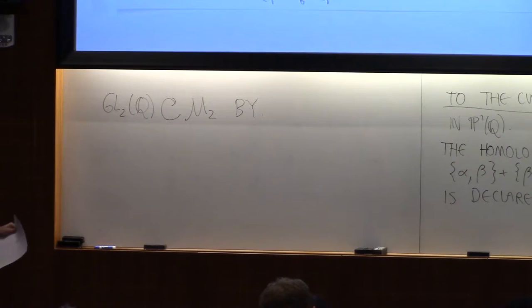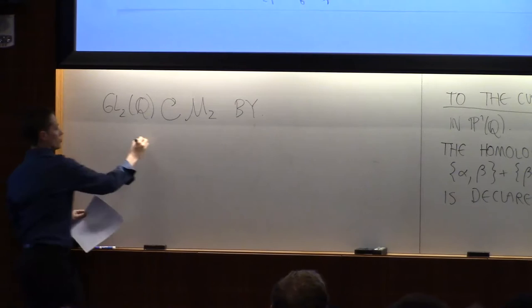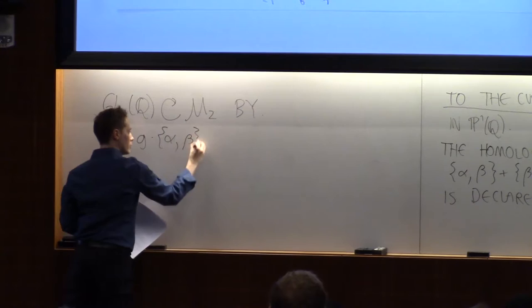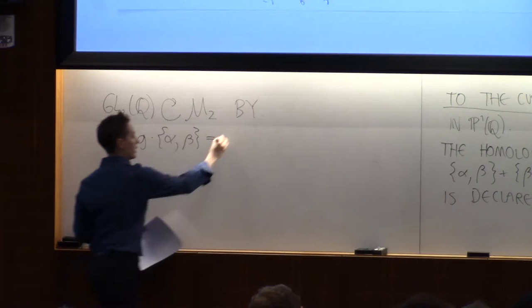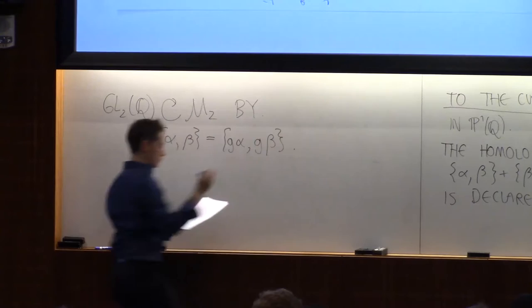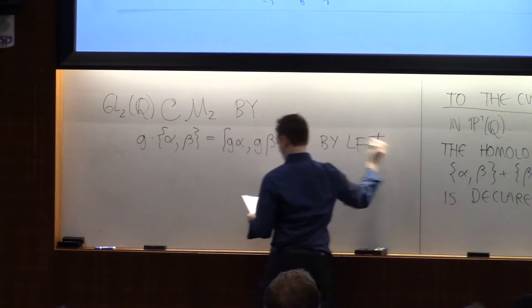How is it going to act? There's a natural action, right? If I take a g in my group, and I want to have it act on a modular symbol, you can act by linear fractional transformations on the alpha and beta.